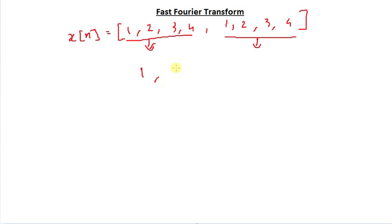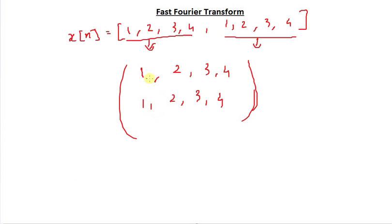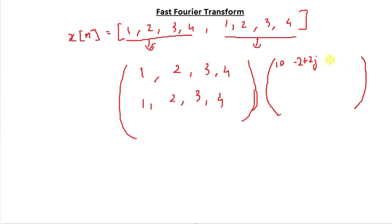Next what I do is find the DFT of each of these rows. Using Octave, the DFT of 1, 2, 3, 4 is: 10, minus 2 plus 2j, minus 2, and minus 2 minus 2j. I have the same terms in the second row because it's the same sequence. So I have calculated the DFT of each row.